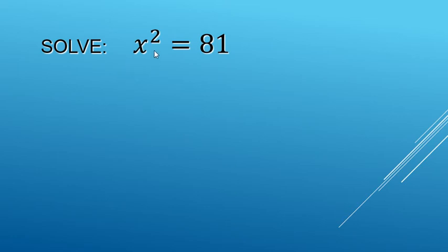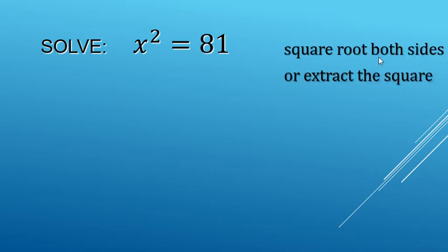All right, so here we're going to solve x squared equals 81. In order to undo the square, we need to square root both sides. It's also called extract the square.